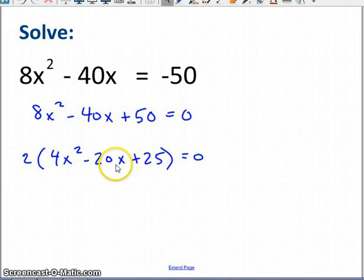Now I'm going to try to factor this. Is this a perfect square? It is. 4x² is. 25 is as well. So I'm going to leave the 2 on the outside, and I'm going to have 2 sets of parens.